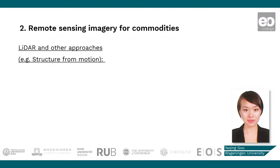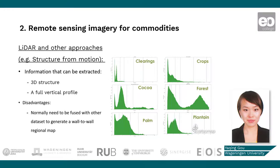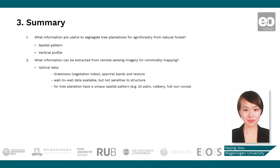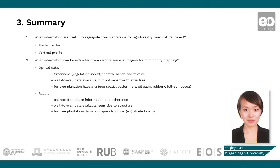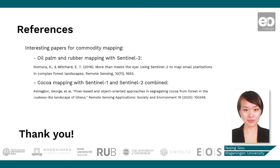LiDAR or structure from motion data can provide a full vertical profile, but it normally needs to be fused with another dataset to generate full coverage for the whole region. In summary, we can segregate different commodity types by their unique spatial pattern or vertical profile. From optical data, we can extract spectral and texture information. Radar imagery provides structural information about the landscape. LiDAR and structure from motion data provide a full vertical profile, but are normally not available at the regional scale. Refer to those links for more information. Thank you.